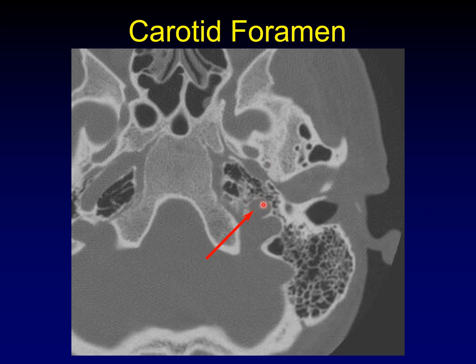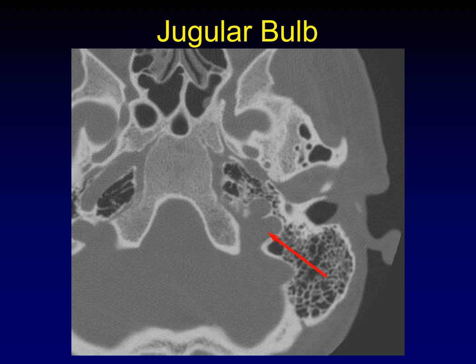This is the carotid foramen. It's going to lead into the carotid canal, which will run at about 45 degrees. Here it is on the other side — you can see its orientation. It'll run just like this in the next cut up. Right behind the carotid foramen is the jugular bulb. It's quite variable in size, and it carries not only the internal jugular vein, but also lower cranial nerves running through here.